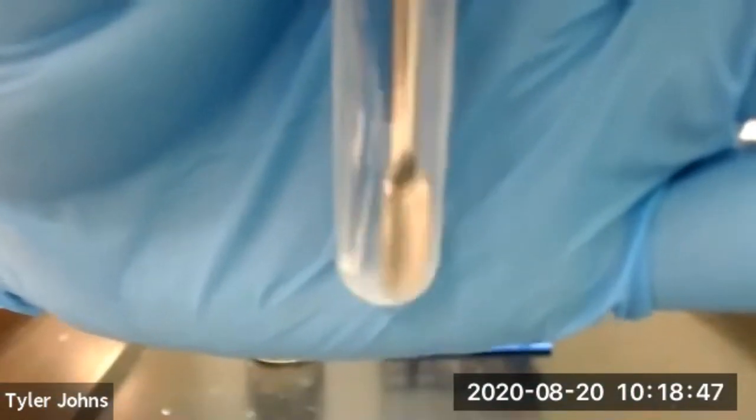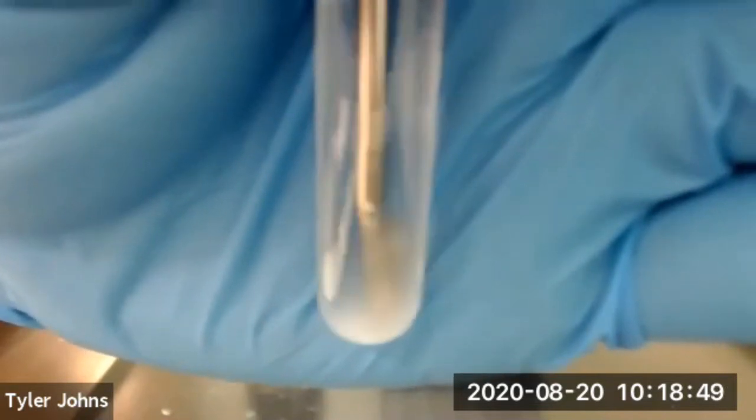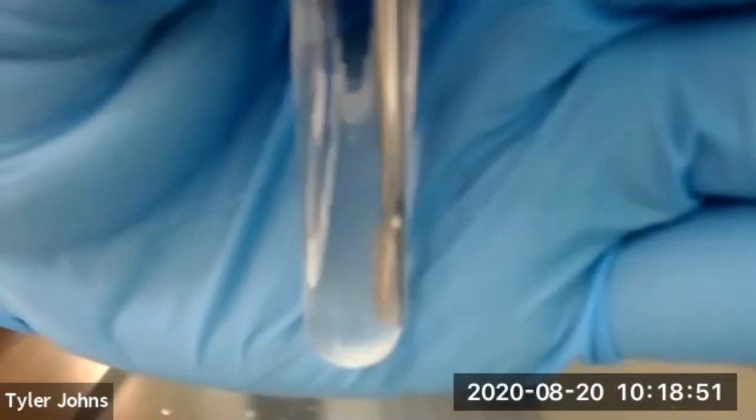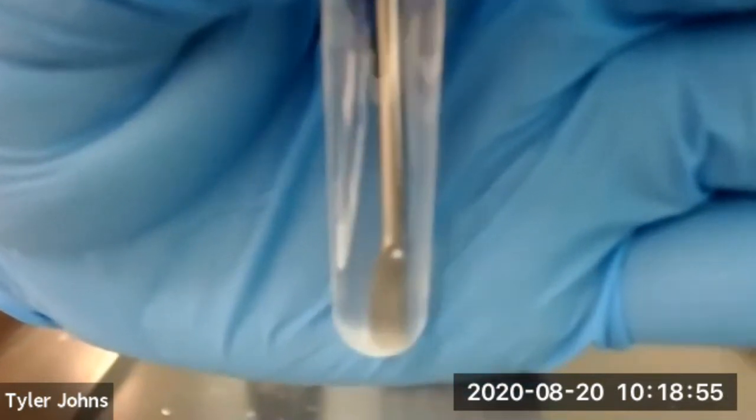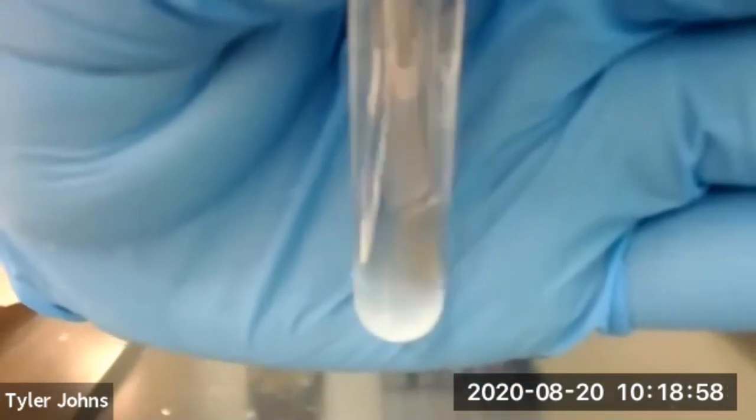Now you can see that our anhydrous sodium sulfate is free-flowing in our test tube and is not clumping. This indicates that our organic layer is completely dry.